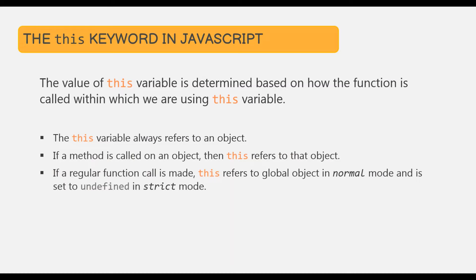In one of the lectures of this course, we learned about the `this` variable in great detail. We learned that `this` always refers to an object. If a method is called on an object, then `this` inside that method will refer to that object. But in case of a regular function call, `this` will refer to the global object in normal mode and will be set to undefined in strict mode. So the value of `this` is determined based on how the function is called.